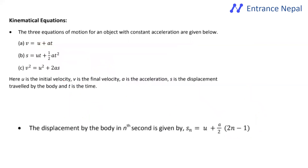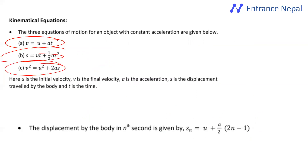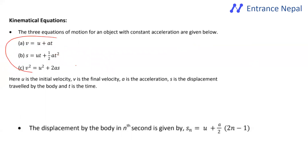This is the kinematical equation — 3 equations. These are: v equals u plus at; s equals ut plus half at²; and v² equals u² plus 2as. These are the kinematics equations.